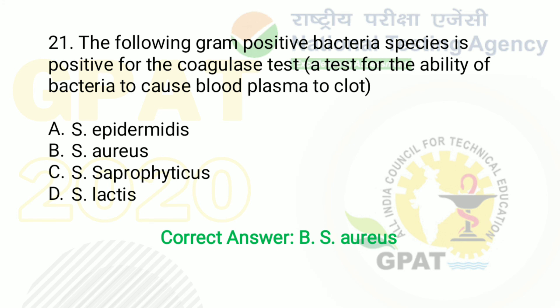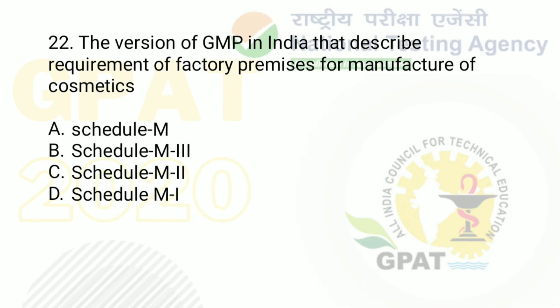Question number 22: the version of GMP in India that describes requirements of factory premises for manufacturing of cosmetics. Option A: Schedule M. Option B: Schedule M3. Option C: Schedule M2. Option D: Schedule M1. Schedule M is for good manufacturing practices overall; M1 is for homeopathic, M2 is for cosmetics, and M3 is for medical devices. So the right answer is option C — Schedule M2.